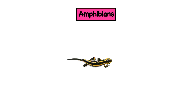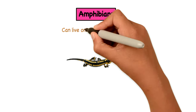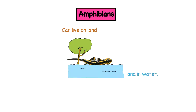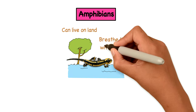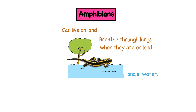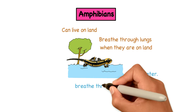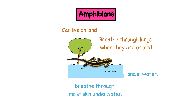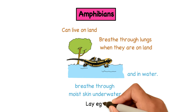Amphibians. They can live on land and in water. When they live on land, they breathe through their lungs. And when they are underwater, they breathe through their moist skin. They can also lay eggs.